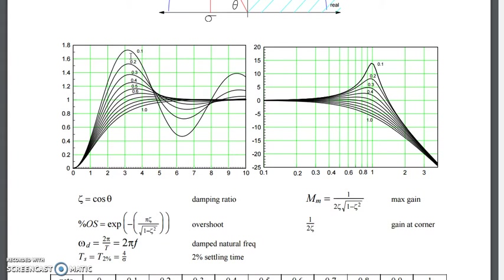So likewise, given a pole, given the step response of the system, I can tell you what the transfer function was from the settling time, the frequency of oscillation, and the overshoot.